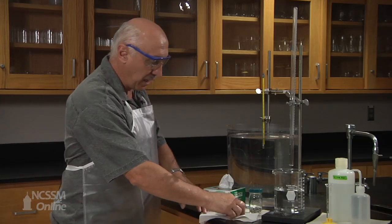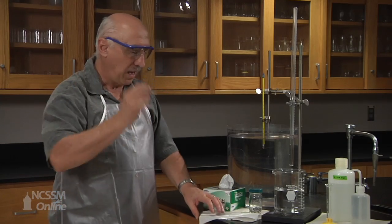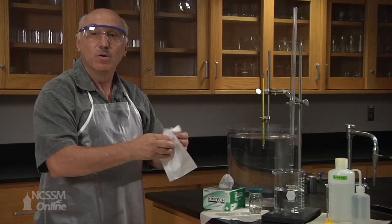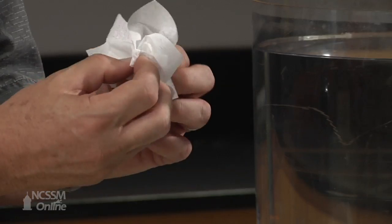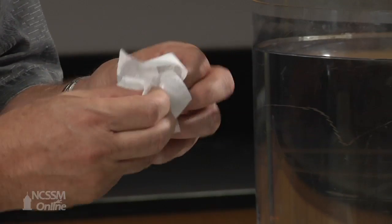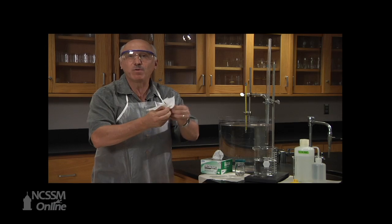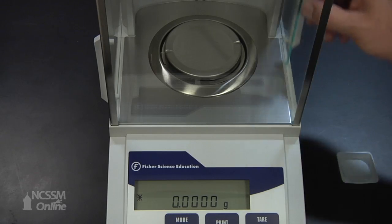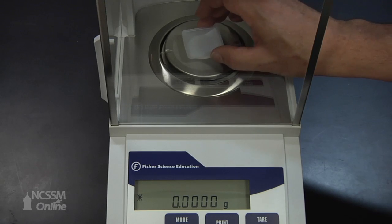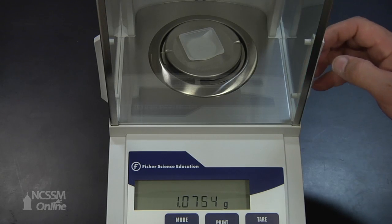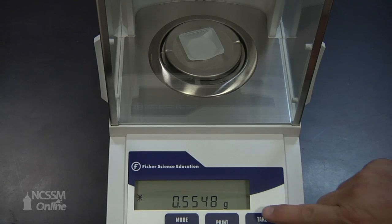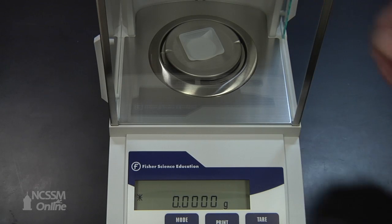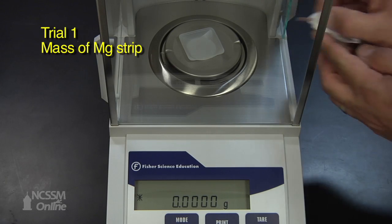The first step is we're going to take a magnesium strip and we're going to wipe it because we want to remove any finger oils that we may have before we mass it. So first we will tear the weighing boat and then we will weigh the first magnesium strip.